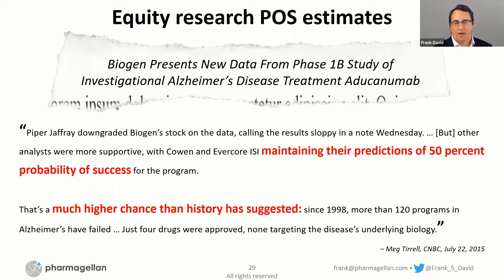This example from aducanumab in the early days is more extreme — claiming a 50% POS for an early-stage Alzheimer's disease drug. And forgetting about what ended up happening, that was just a bad call. It's simply not plausible at all to make that call.